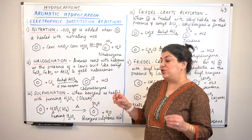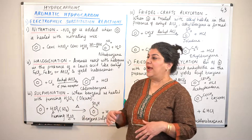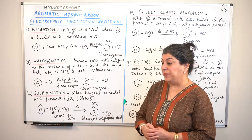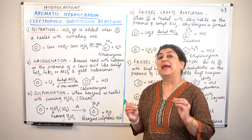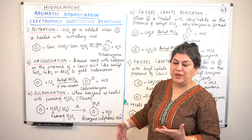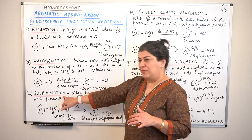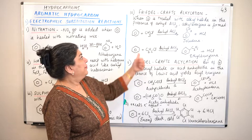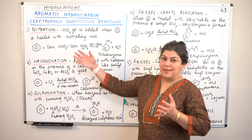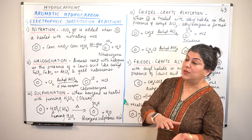Before I come to the mechanism of the reaction, let us see what these reactions are and where we see examples of these electrophilic reactions. Electrophilic substitution is basically a mechanism, and the examples of electrophilic substitution reactions in aromatic hydrocarbons are nitration, halogenation, sulfonation, acylation, and Friedel-Crafts alkylation and acylation. Let us understand these reactions first before we go into the mechanism in the next video.